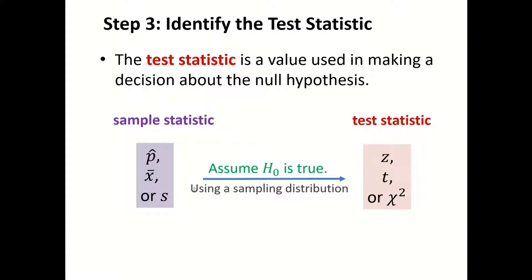The next step is to identify the test statistic. Once we find the sample statistic, how do we know if it will be significantly high or significantly low? We need to turn it into a test statistic.